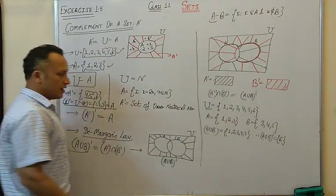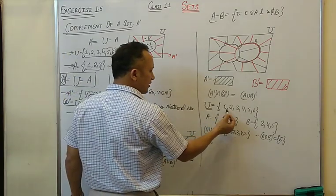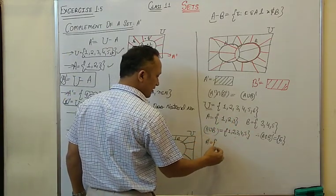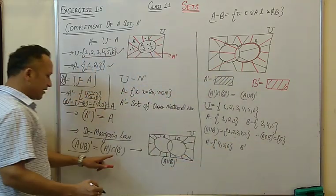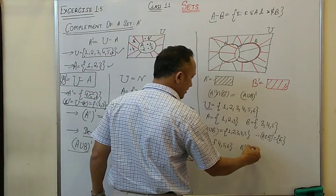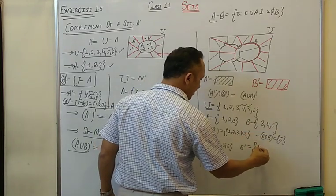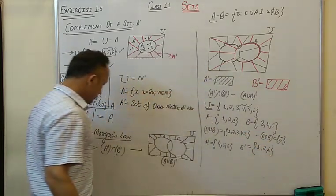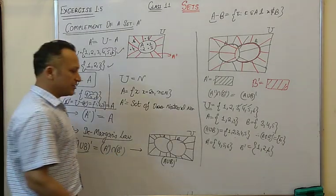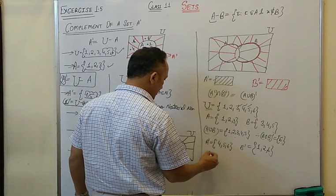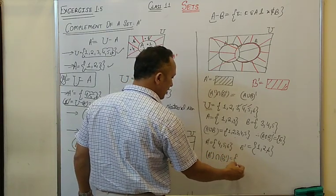Firstly calculate A union B: A∪B = {1,2,3,4,5}. Next, calculate (A∪B)' — which is Universal minus A∪B — so we discard {1,2,3,4,5} from {1,2,3,4,5,6} and we are left with {6} only. For the right-hand side: A complement = Universal minus A = {4,5,6}. B complement = Universal minus B = {1,2,6}. A' ∩ B' — common elements of {4,5,6} and {1,2,6} — is {6} only.